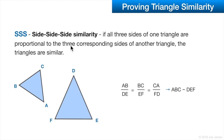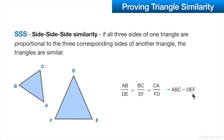Side-side-side similarity: if all three sides of one triangle are proportional to the three corresponding sides of another triangle, then the triangles are similar. So if we can figure out which sides are proportional to the corresponding sides in the other triangle, we can prove similarity between the two triangles.